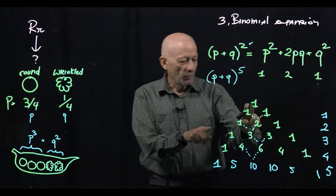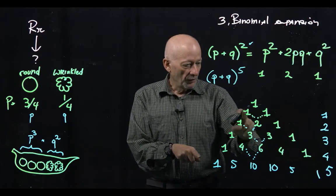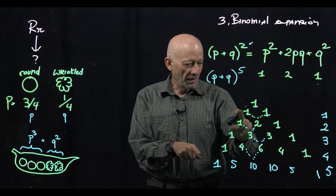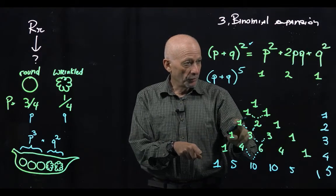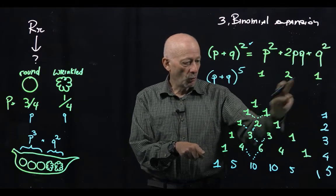And by the way, if we go down the Pascal triangle, the first line of two members is for the exponent of 1. This is the exponent of 2. As you can see, 1, 2, 1. Here it is 1, 2, 1.